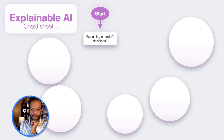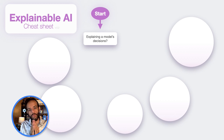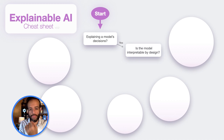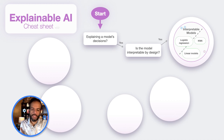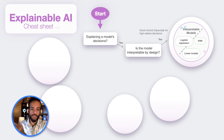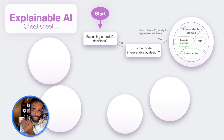The first question we ask is if we want to explain a model's decisions. This is an important branching point because there are explainability methods that focus on a model's internal representations more so than its predictions. If we answer yes, we branch to the right. Then we ask: is the model currently interpretable by design? If yes, that leads us to the first group — models that are interpretable by design, like logistic regression, linear models, and k-nearest neighbors. You can look at the weights and coefficients of the models, and that is a form of explainability. This is especially important in high-stakes decisions.